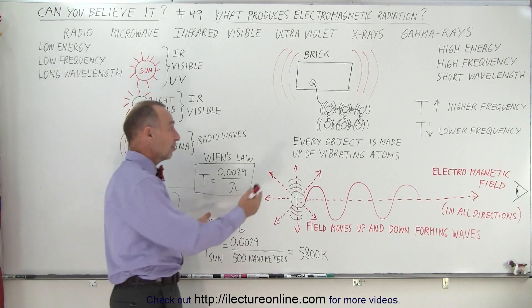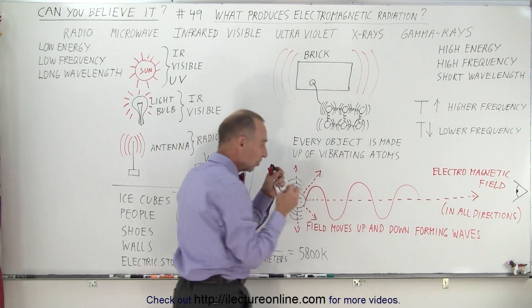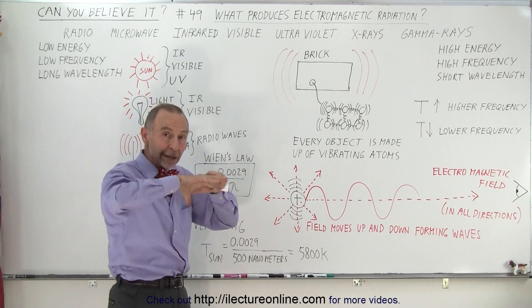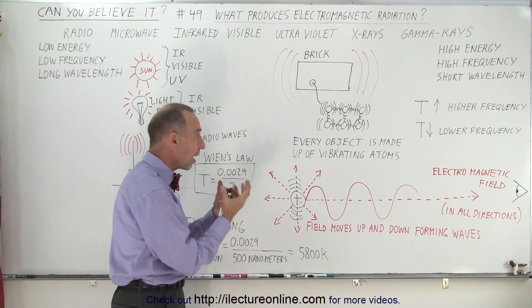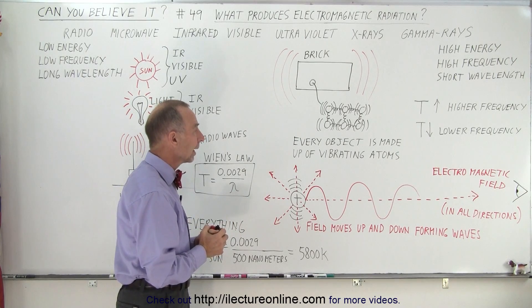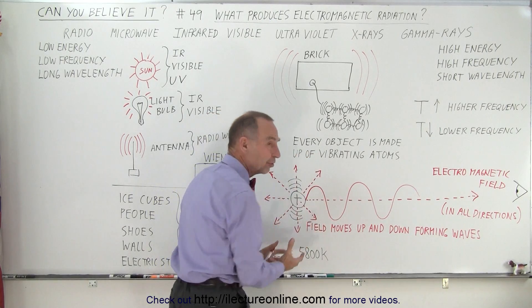Well, it turns out that every object is made up of vibrating atoms. So here we have a small little segment of a brick, and we see all the little atoms just vibrating back and forth. And each atom has a nucleus. The nucleus is positively charged because it contains the protons of the atoms. And so, around each nucleus that is positively charged, we have electric fields.